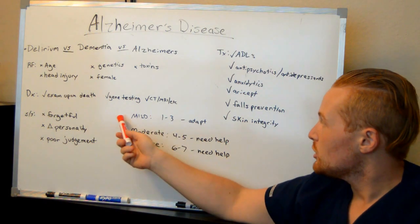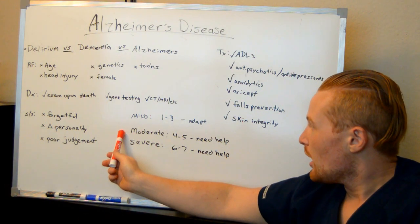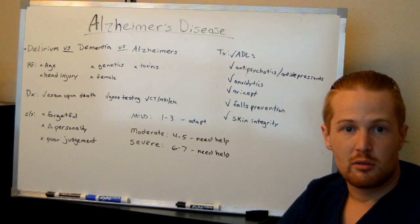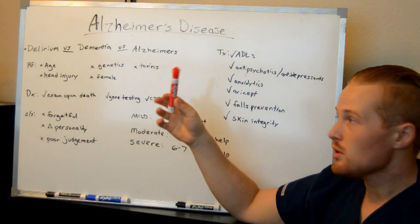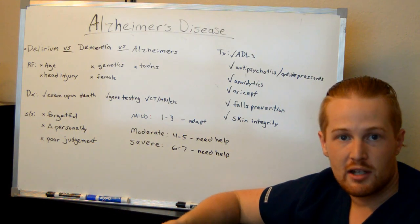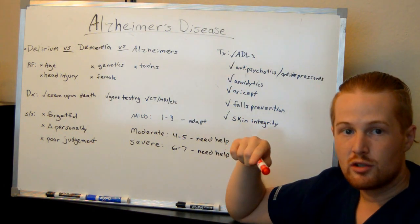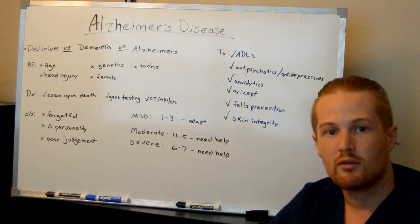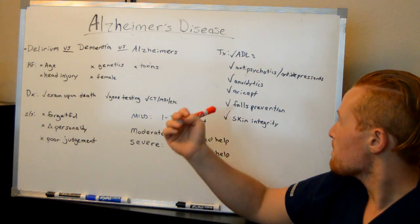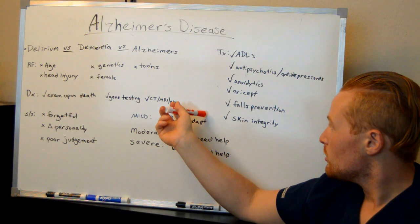Treatment for Alzheimer's in the mild stages may just be education of the patient and family, as they can still adapt. In the moderate to severe stages, treatment kicks in more actively — patients need assistance with activities of daily living such as eating, showering, and feeding. Medications include psych meds: antidepressants if the patient becomes very sad, and anti-psychotics or anti-anxiety medications if they become anxious or aggressive. Aricept can decrease the progression of Alzheimer's, keeping the patient in their current stage longer without curing it. Two key nursing priorities are preventing falls, especially when patients become wanderers, and promoting skin integrity.